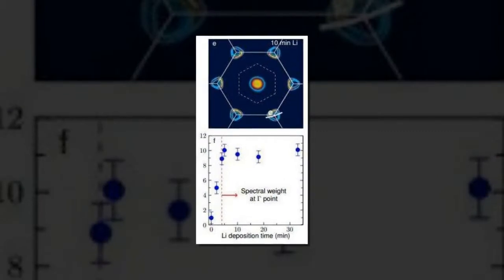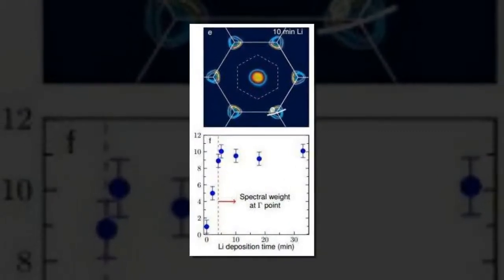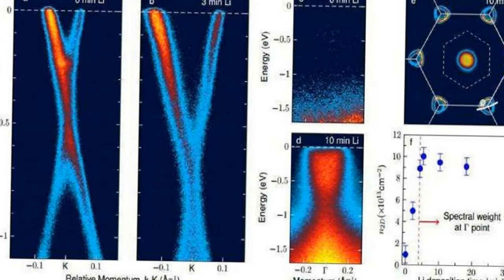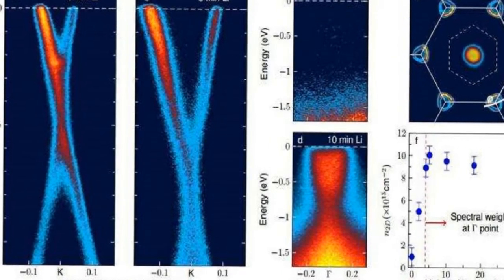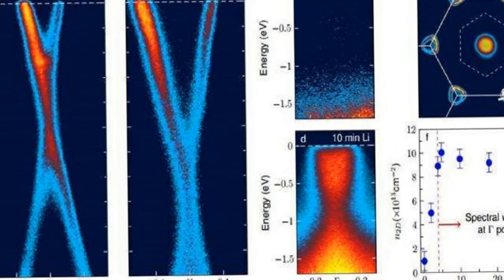By now, most everyone in the science community is aware of graphene, the single carbon atom layer of material that is being studied to figure out how it can be mass produced and connected to other devices to take advantage of its superior electrical properties.